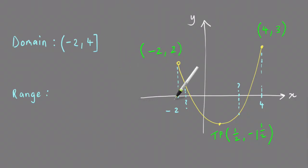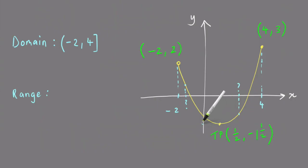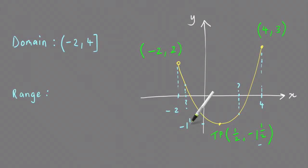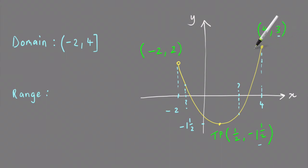To find the range, you do a similar thing — start by looking for the lowest y value, which is at the turning point here. Marking that in, it is minus one and a half — that's the y coordinate. Then going up to the highest point on the graph, the y value there is 3.